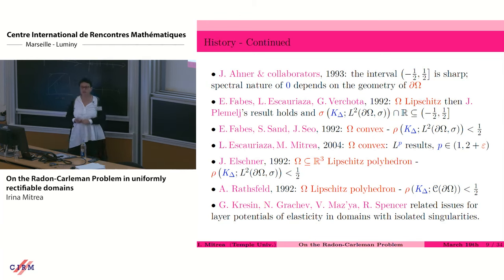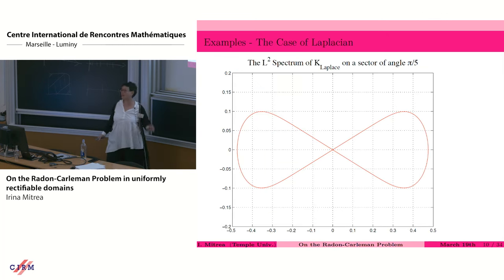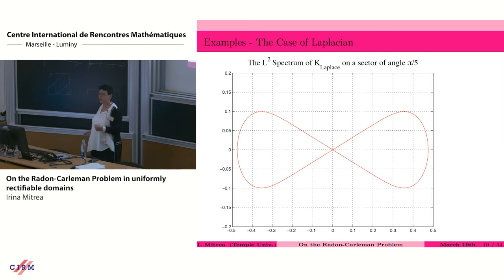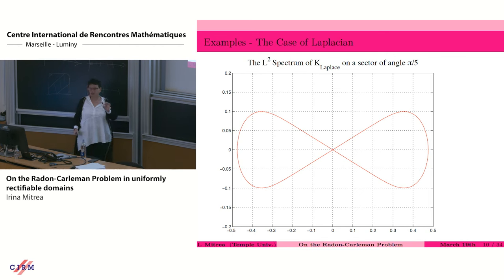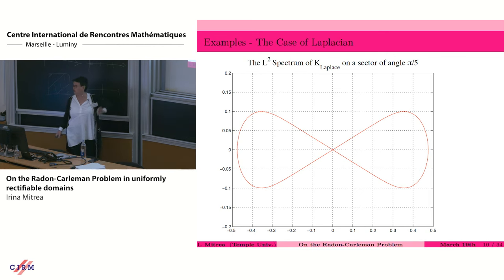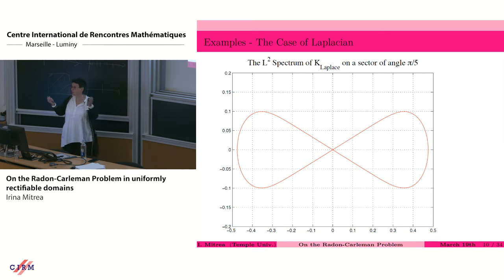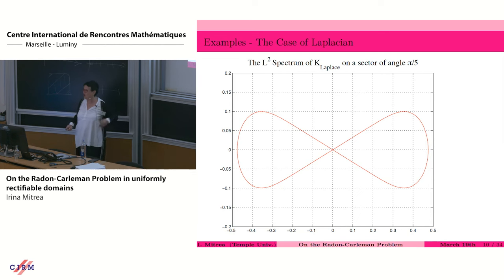People have looked at these issues in the context of other second order elliptic PDEs. I'm going to show some pictures. We're looking at the spectrum of the harmonic double layer — the boundary-to-boundary double layer for the Laplacian — on an infinite sector of angle pi over 2. We're looking at the spectrum of this operator on L2. The spectrum consists just of this curve. If a point z is not on the curve, then the operator z identity minus K is invertible on L2. Invertibility fails only when the point is on the curve. Note that the point one-half does not belong to the curve, so you have the ability to invert. In particular, the spectral radius of this operator is less than a half.